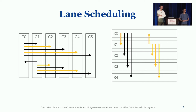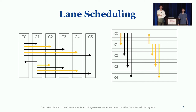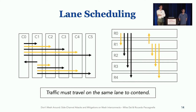Furthermore, when traveling vertically, we see special cases — for instance, when going from row 0 to row 1, there are even special cases. So the lane selection algorithm is non-trivial. The key takeaway from all this, though, is that traffic must travel on the same lane in order to contend.